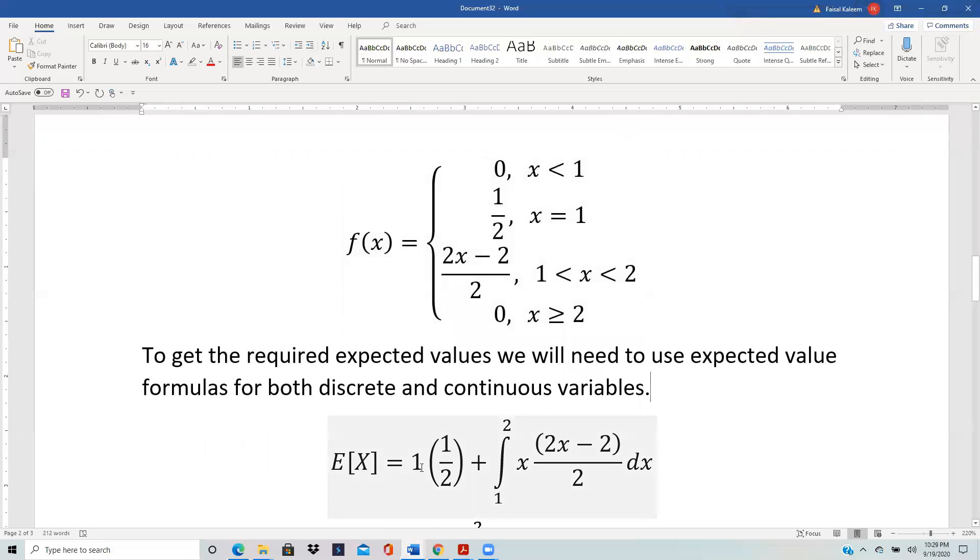The discrete formula is summation xf(x), so there's only one value for which we would need the xf(x) and that's over here. So x is 1 and f(x) is a half, so 1 times one half. And then for the continuous it's the integral of xf(x), so the integral of x against this part and everywhere else it's zero.